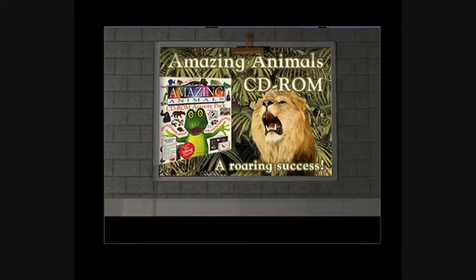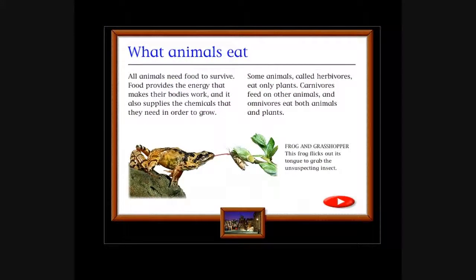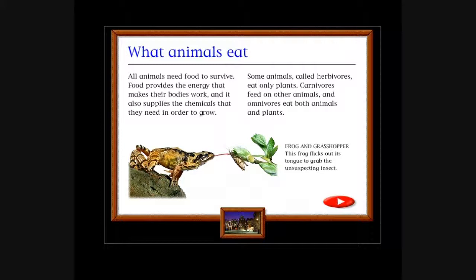Animals CD-ROM, a roaring success. Is that that talking frog like Woody? I guess. What animals eat: All animals need food to survive. Food provides the energy that makes their bodies work and it also supplies the chemicals that they need in order to grow. Some animals called herbivores eat only plants. Carnivores feed on other animals, and omnivores eat both animals and plants. Frog and grasshopper: This frog flicks out its tongue to grab the unsuspecting insect. I think it's just having sex with it, with its tongue. Looks like they're having fun.